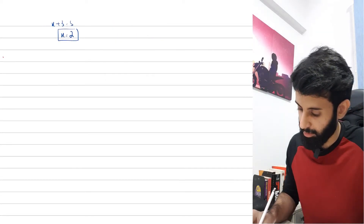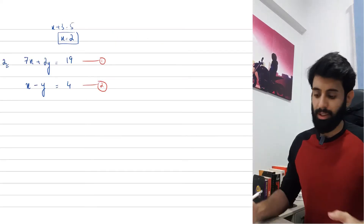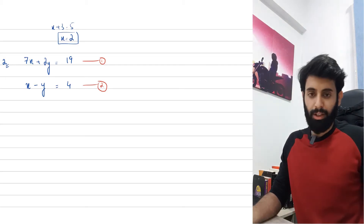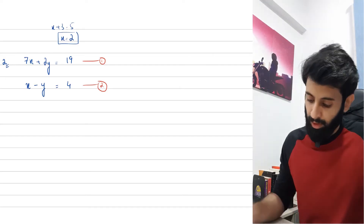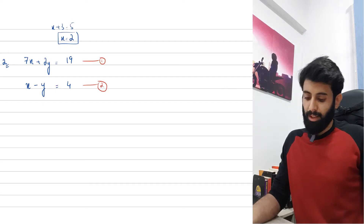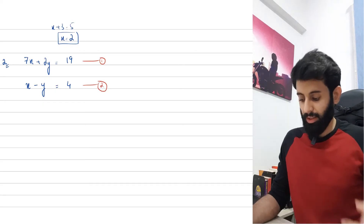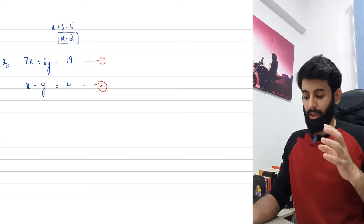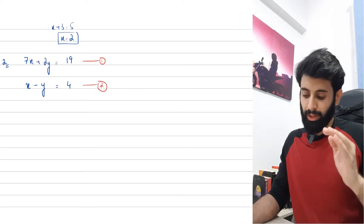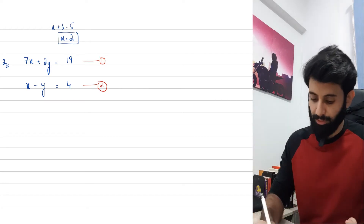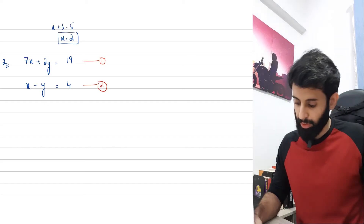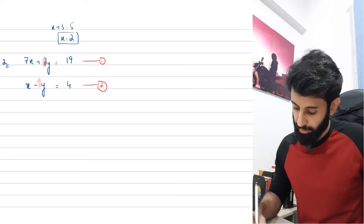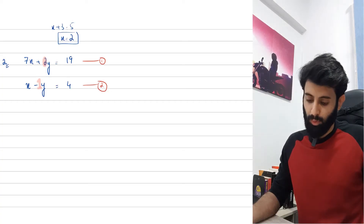Here's example number two: 7x plus 2y equals 19, and x minus y equals 4. I'm going to use the same elimination method. In this question I strongly prefer to eliminate y — because the coefficient of y in the first equation is positive 2, and in the second equation it's minus 1.